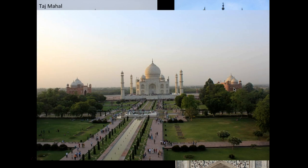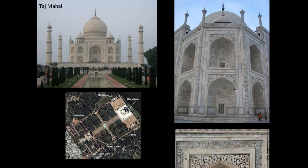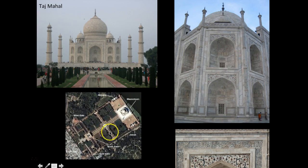We're seeing a big change in India, where mausoleums are given far more architectural significance than in other parts of the Islamic faith. Here's another closer view of the Taj Mahal, where you can see the waterways included in the complex, with the mosque on one side, the rest building on the other, and the mausoleum at the top.